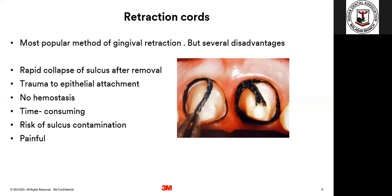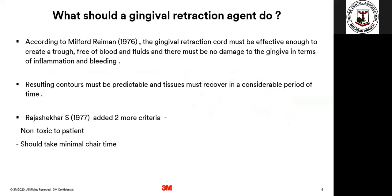The retraction cord also does not provide a hemostasis solution. If you have bleeding gums — because of your preparation or from pushing in the cord — unless the cord is impregnated with an external chemical, it does not have the capability for hemostasis. It is also very time-consuming, with a risk of sulcus contamination if chemicals are used, and it is very painful to the patient when going too close to the attachment. All of these reasons deter dentists from doing it, and frankly, nobody actually feels it's an important step.